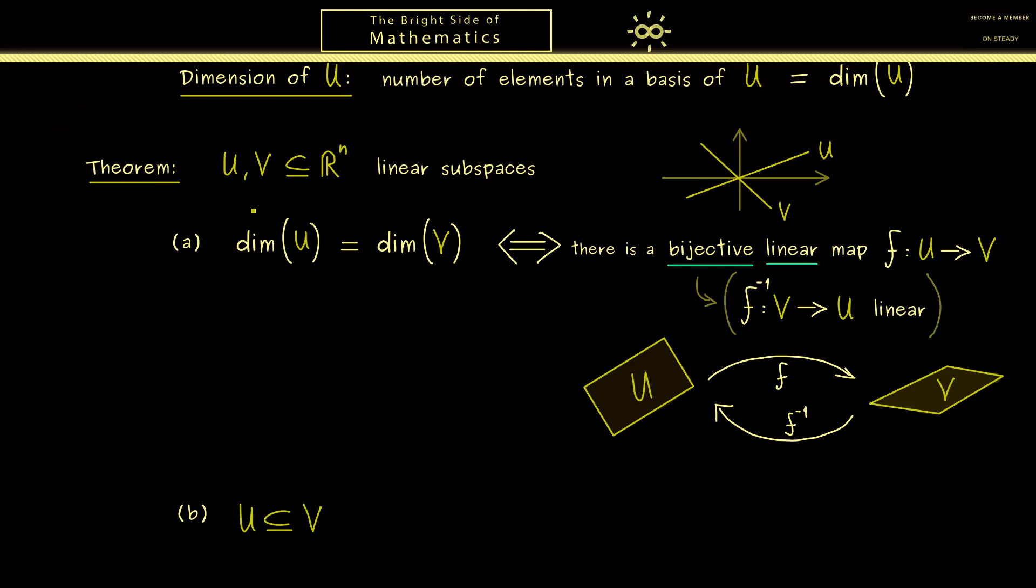Now assume here that the one subspace U is a subset of the other one. So indeed not like in this picture in R^2 before. However in the same way as before we also want to include that both dimensions coincide. Hence it means part A is applicable which means we find such a bijective linear map.